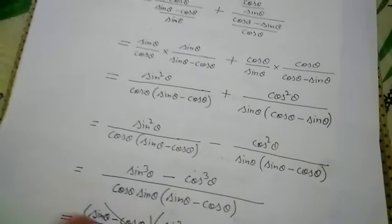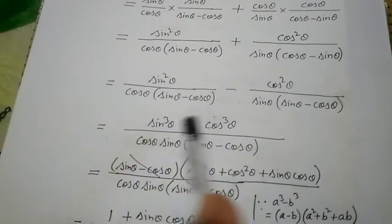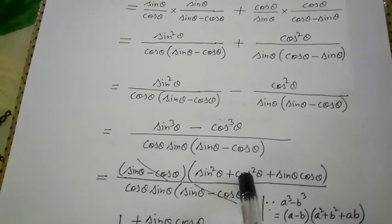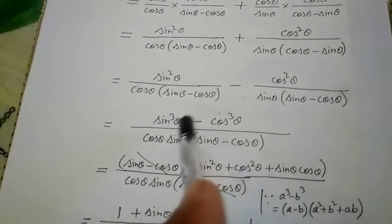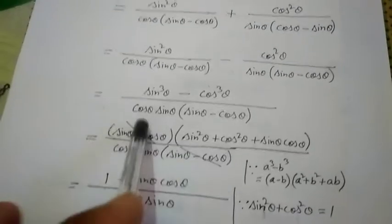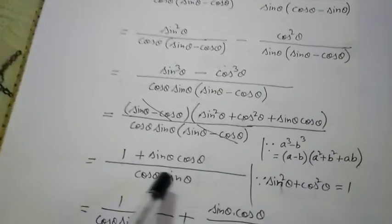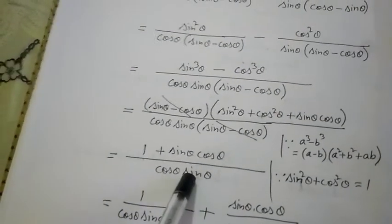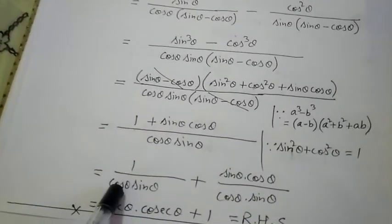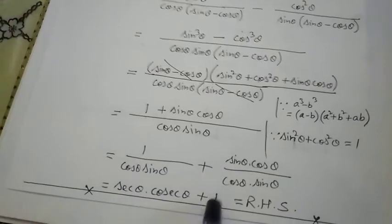Applying the a³ − b³ identity: a³ − b³ = (a − b)(a² + ab + b²). Here a = sin θ, b = cos θ. So sin³ θ − cos³ θ = (sin θ − cos θ)(sin²θ + sin θ cos θ + cos²θ). The bracket (sin θ − cos θ) in numerator and denominator cancels. In the remaining bracket: sin²θ + cos²θ = 1, so we have (1 + sin θ cos θ) divided by sin θ cos θ. Splitting: 1/(sin θ cos θ) + 1, which gives (1/cos θ)(1/sin θ) + 1 = sec θ · cosec θ + 1. This equals 1 + sec θ · cosec θ, which is the RHS.